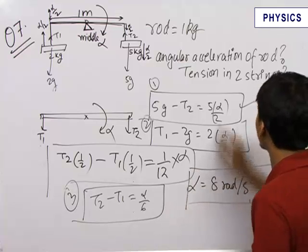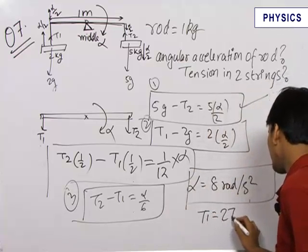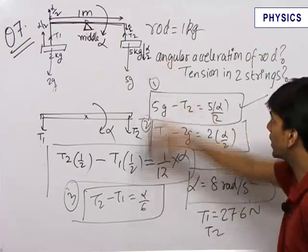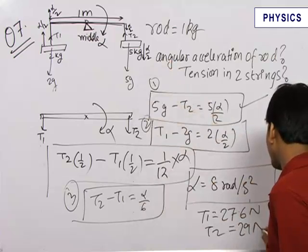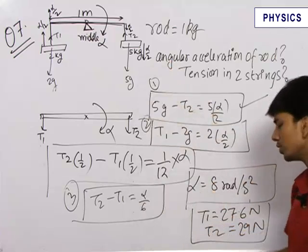You can also find out the values of tension, tension in two strings that is needed, then tension comes out to be 27.6 Newtons and tension T2 in the string joining 5 kg comes out to be 29 Newtons. So our final answer for the alpha T1 and T2 is here.